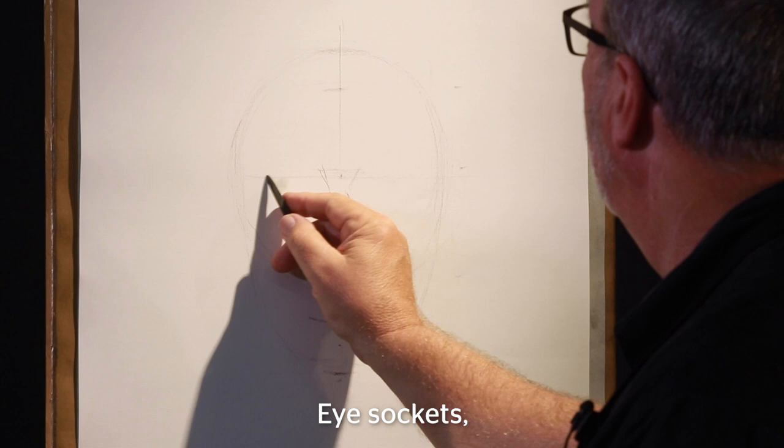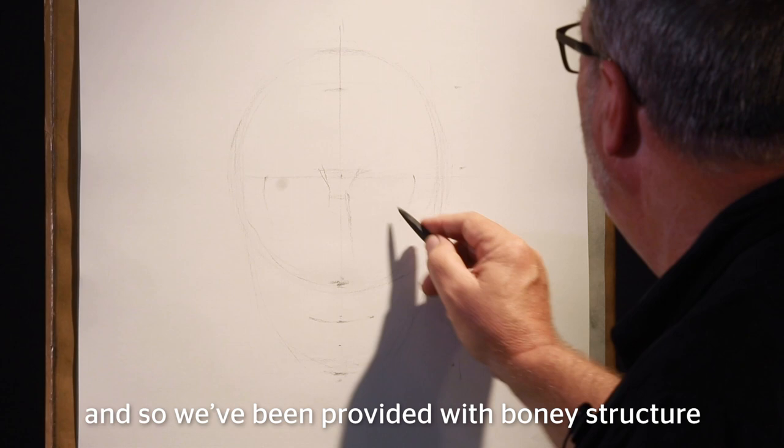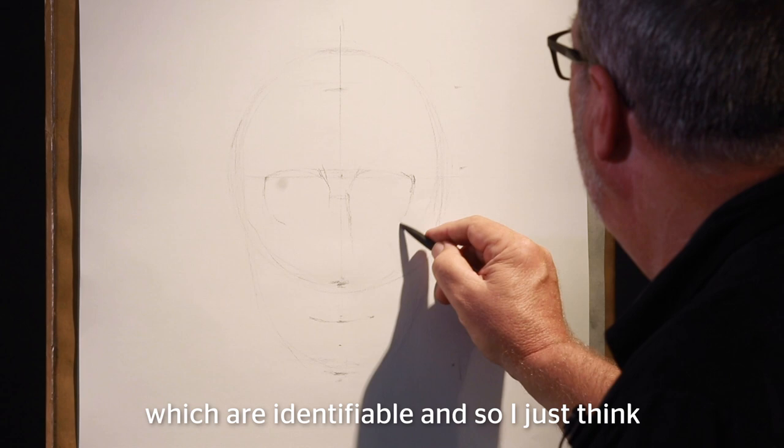Eye sockets. The eyes are delicate. We need them. And so we've been provided with bony structures around the eyes to hopefully protect them. And they create a lot of surface forms which are identifiable. And so I just think of a pair of aviator sunglasses at the beginning. That's one way of going about it.